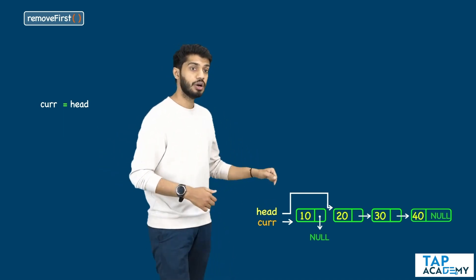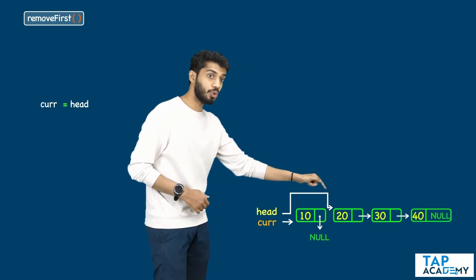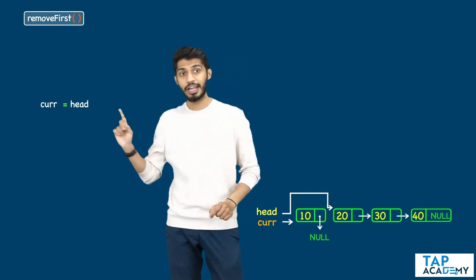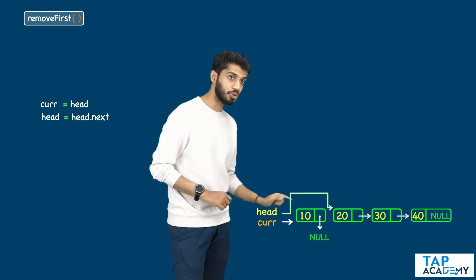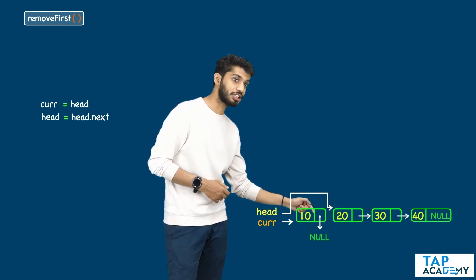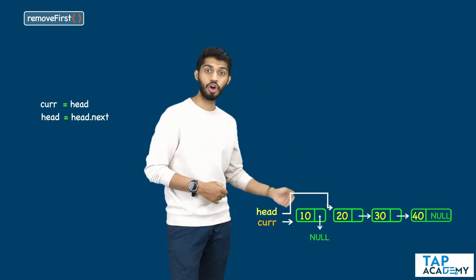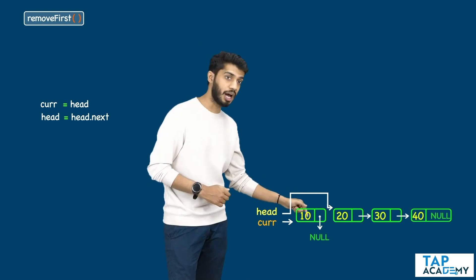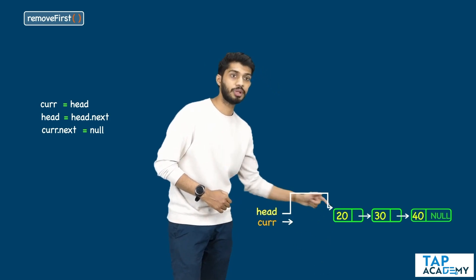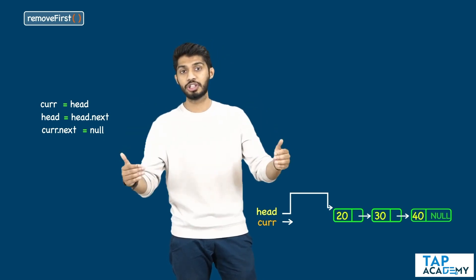All I need to say is current is equal to head. After that, I need to make the head point to the second node. Where do I have that reference? In head.next. So all I need to say is head is equal to head.next. What happens? Head would start pointing to the second node. After this, I need to make sure that current.next is equal to null — since current.next is pointing to the next node, I should disconnect that particular link. By saying current.next equal to null, this node gets completely removed from the linked list.